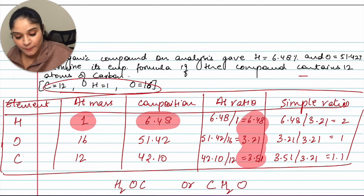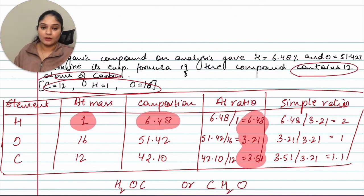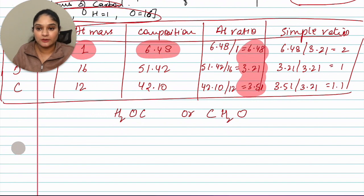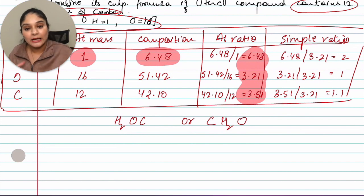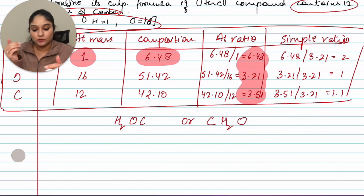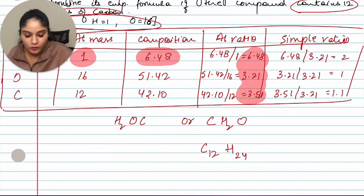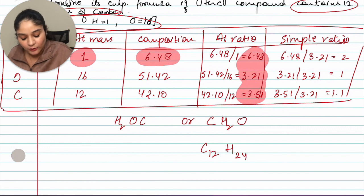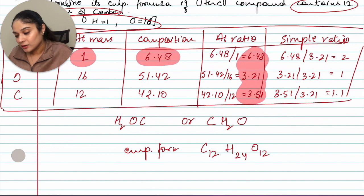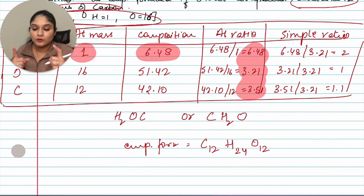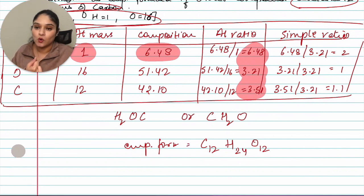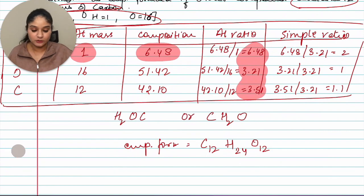The question says the compound contains 12 atoms of carbon. From the empirical formula CH₂O, carbon and oxygen have the same ratio and hydrogen is double. So if carbon = 12, hydrogen = 24 and oxygen = 12. Therefore the final empirical formula is C₁₂H₂₄O₁₂.